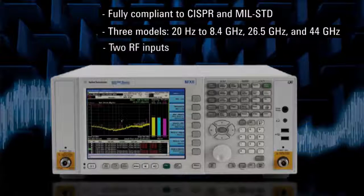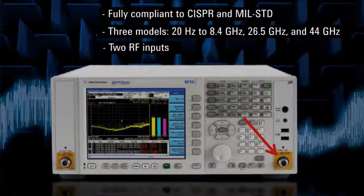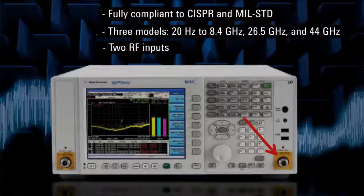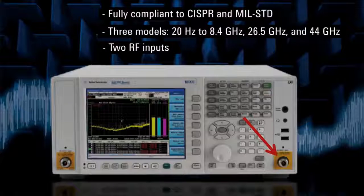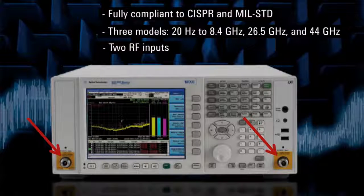On the front panel, there are two RF inputs. One for radiated emission tests up to 44 GHz to comply with MIL-Standard 461 and FCC Part 15 compliance testing. The second RF input has a built-in limiter for pulse protection and is used for conducted emission tests up to 1 GHz.